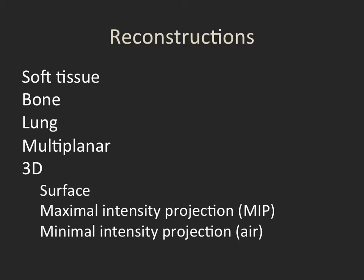First, to talk briefly about reconstructions. This is usually done by the technologist, though some reconstructions can be done by the radiologist on a different workstation or within the PACS station. The technologist takes the raw data and reconstructs it in different ways to optimally show different tissues — such as soft tissue, bone, or lung reconstructions — as well as various multi-planar reconstructions in sagittal, coronal, and many oblique planes.